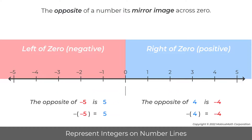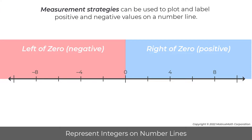Notice that taking the opposite of a non-zero number always changes the sign of the number. Measurement strategies can be used to plot and label positive and negative values on a number line. For example, two yellow bars measure the distance from zero to four. Since each yellow bar is the same length, the length of each yellow bar is two, because two plus two equals four. Once the length of the bar is known, it can be used to measure and label other points on the line.